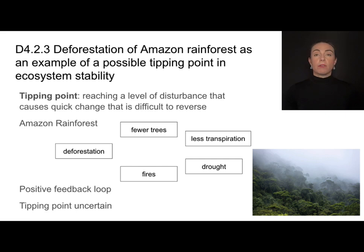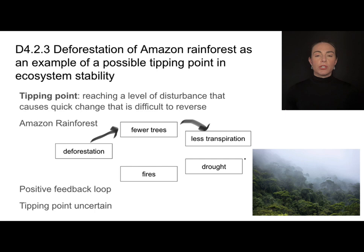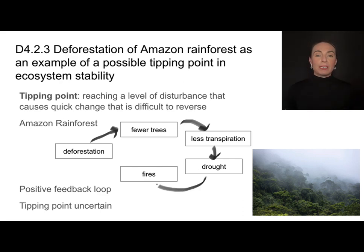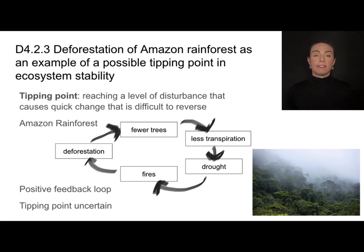We can look at the example of the Amazon rainforest. Deforestation causes fewer trees, and trees are responsible for transpiration — they give off a lot of water vapor. Fewer trees means less transpiration, which means drought, so that condensation won't make its way through the water cycle. If there's drought, there are fires, and fires destroy even more trees, leading to even less transpiration, even more drought, and even more fires. This is an example of a positive feedback loop.